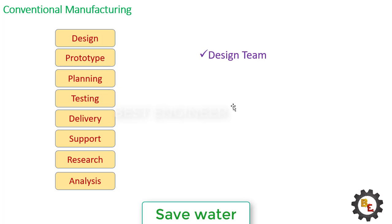There are four teams working under this commercial manufacturing process. First, the design team — they will do new designs or modify the existing design to fulfill the customer requirement. Next, the production team — they will schedule the manufacturing work, produce the individual components, and assemble them to get a final product.